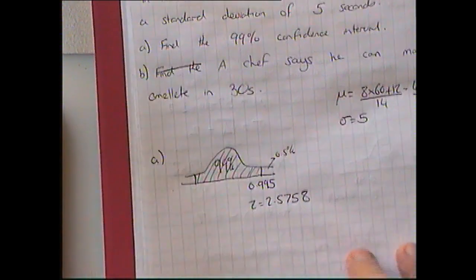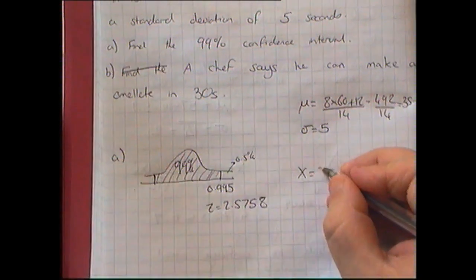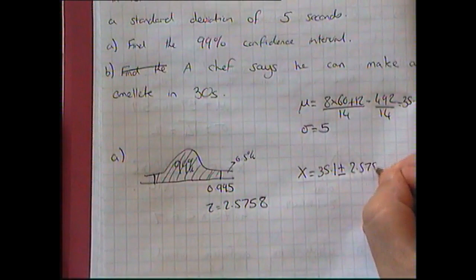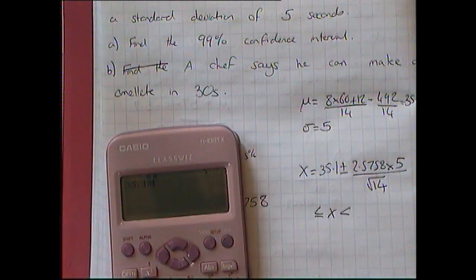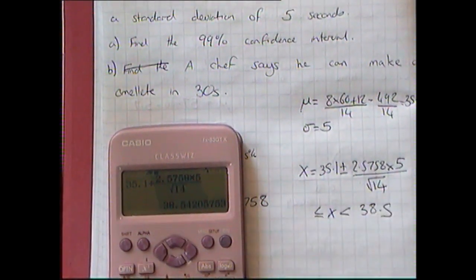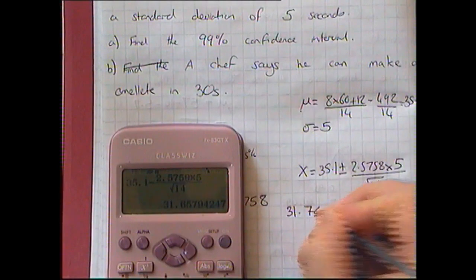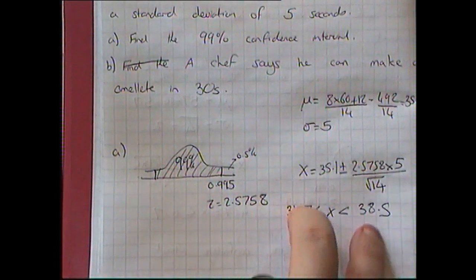From the table, 0.995 gives a z value of 2.5758. Putting that into the formula: x equals 35.1 plus or minus 2.5758 times 5 divided by the square root of 14. The upper value is 35.1 + 2.5758 × 5 / √14 = 38.5, and the lower value — changing to subtraction — is 31.7. I'm 99% confident my chefs' omelette time would be between 31.7 and 38.5 seconds.